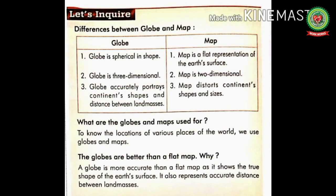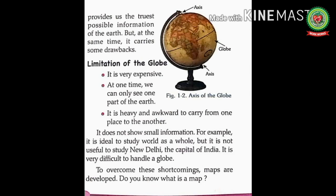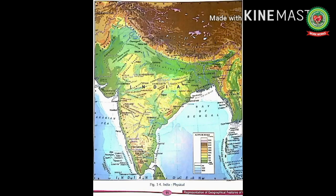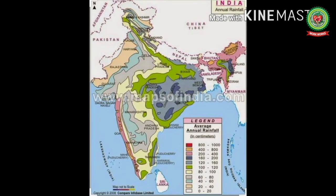Now let's discuss questions related to this topic. First: what are globes and maps used for? Answer: to know the location of various places of the world, we use globes and maps. Second: why is the globe better than a flat map? Answer: a globe is more accurate than a flat map as it shows the true shape of the earth's surface and also represents accurate distance between landmasses. In this video we have discussed the meaning of globe, its uses, limitation of globe, then meaning of map, types of maps — physical map, political maps and thematic maps.